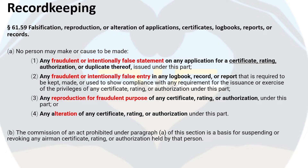FAR 61.59 covers falsification, reproduction, or alteration of applications, certificates, logbooks, reports, or records. It basically states that if you falsify any information in your logbook or alter an application or certificate, it is basis for suspending or revoking any airman's certificate or rating held.